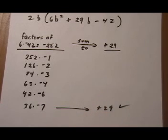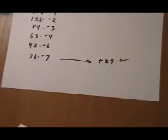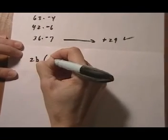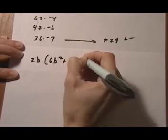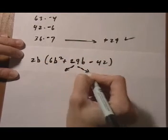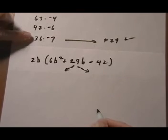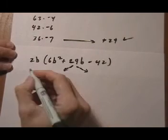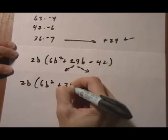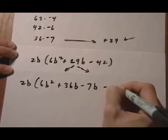So now we're going to use those factors and rewrite the middle term. So let's go ahead and do that. All right. So we've got, we had 2b times 6b squared plus 29b minus 42. And now we're going to split this middle term into the factors of 36b minus 7b. So we have 2b times 6b squared plus 36b minus 7b minus 42.